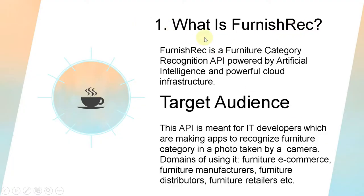What is FurnishRec? FurnishRec is a Furniture Category Recognition API powered by artificial intelligence and powerful cloud infrastructure. This API is meant for IT developers who are making apps to recognize furniture category in a photo taken by a camera. Domains of use include furniture e-commerce, furniture manufacturers, furniture distributors, and furniture retailers.